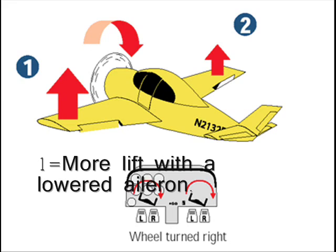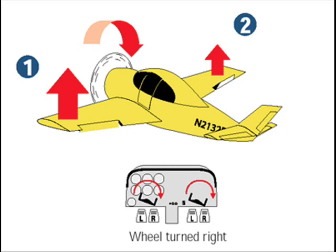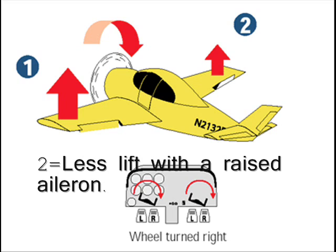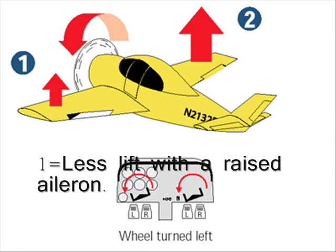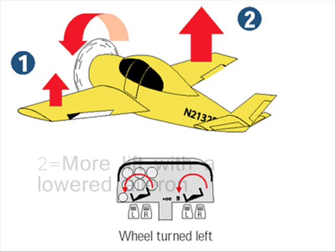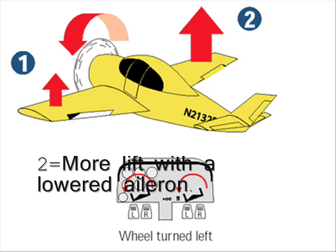Ailerons. Ailerons are the movable surfaces on the outer trailing edges of the wing. Their purpose is to bank the airplane in the direction you want it to turn. When the control wheel is turned to the right, the ailerons simultaneously move in opposite directions — the left wing aileron lowers, increasing the lift on the left wing, and the right wing aileron raises, decreasing the lift on the right wing, causing the airplane to bank right. When turned left, the opposite occurs, banking the airplane to the left. Ailerons allow one wing to develop more lift and the other less, and this differential lift tilts the total lifting force in the direction you want to turn.